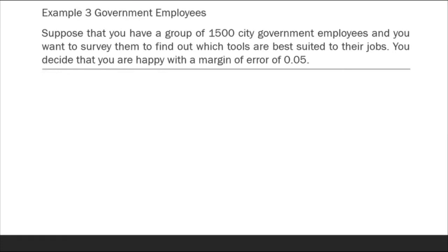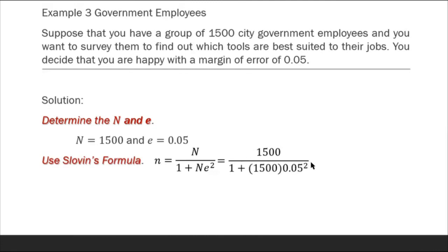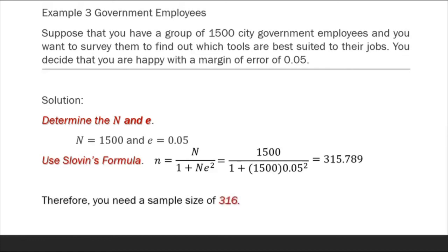Example three — Government Employees: Suppose you have a group of 1,500 city government employees and you want to survey them to find out which tools are best suited to their jobs. You decide on a margin of error of 0.05. Using Slovin's formula: n equals 1500 over 1 plus 1500 times 0.05 squared, which equals 315.789. Therefore, you need a sample size of 316.